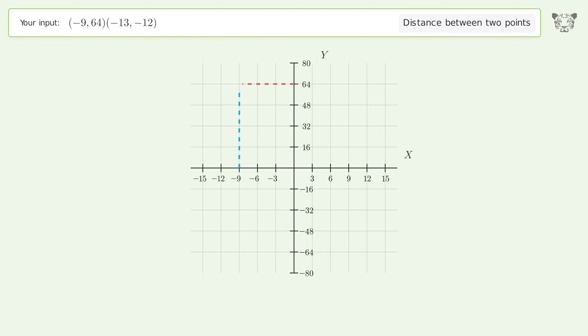The coordinates of point 1 are x1 equals negative 9 and y1 equals 64. The coordinates of point 2 are x2 equals negative 13 and y2 equals negative 12.